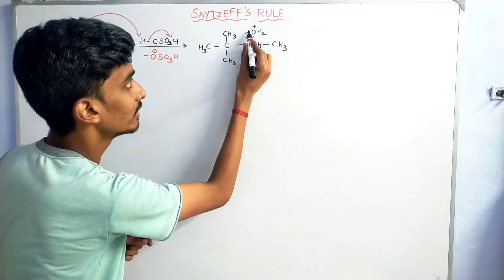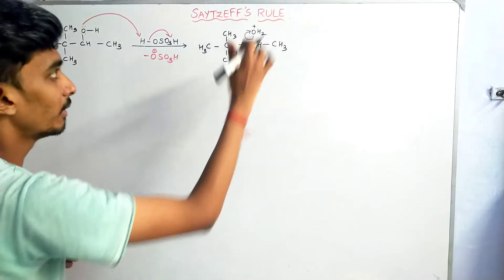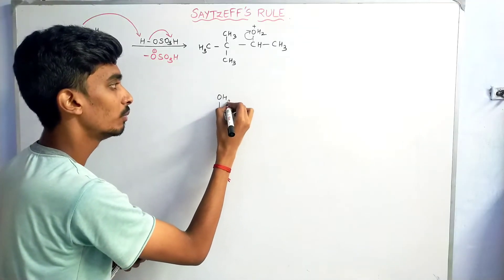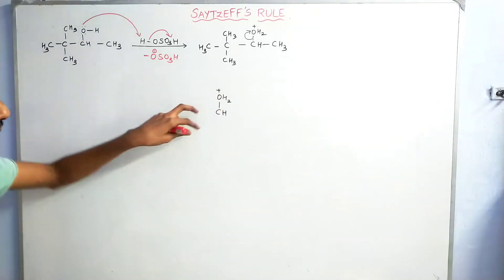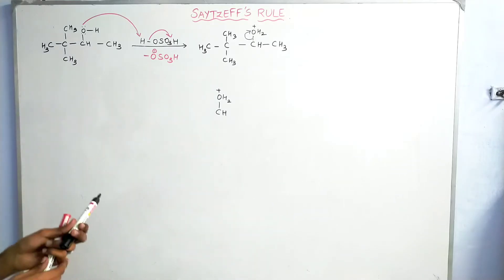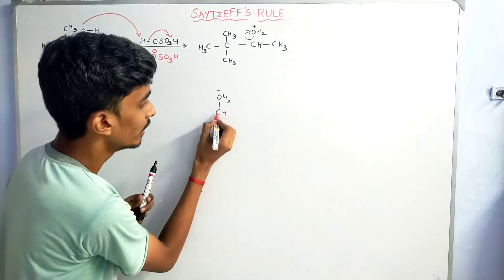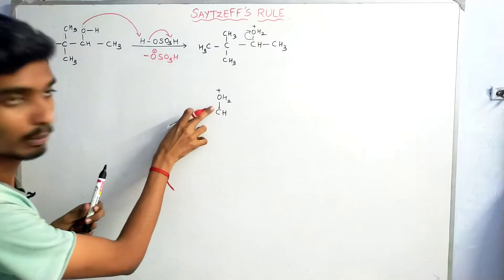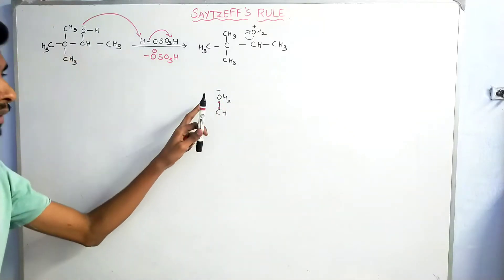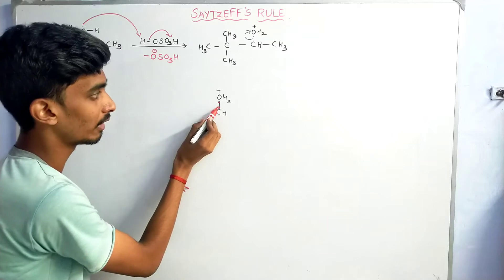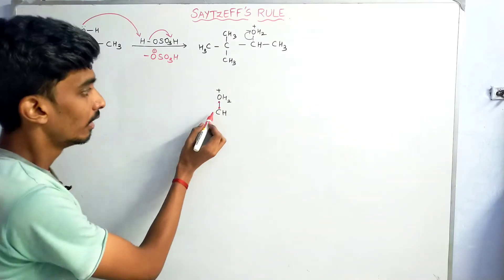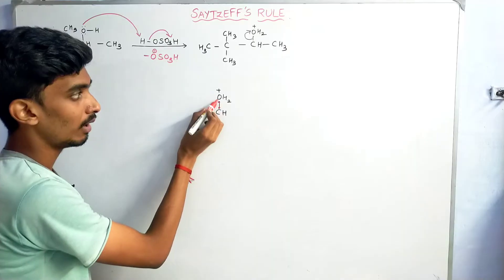OH₂⁺ is a very good leaving group. Now this bond breaks: the carbon–oxygen bond electrons shift, the leaving group departs, and carbon becomes electron-deficient, generating a carbocation intermediate — a carbon with a positive charge.